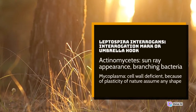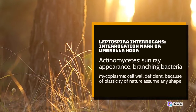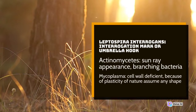Leptospira interrogans — interrogation mark or umbrella hook shape. Actinomycetes — sun ray appearance, branching bacteria. Mycoplasma — cell wall deficient; because of the plasticity of their nature, they can assume any shape.